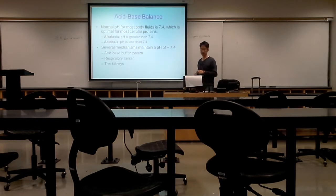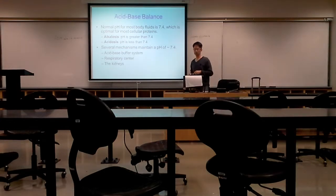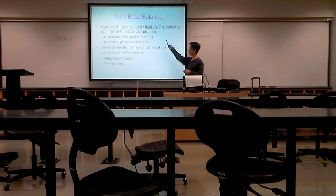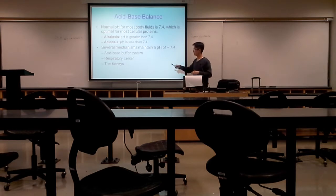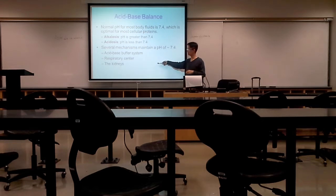For acid-base balance, we want to maintain blood and body fluid at around pH 7.4. Greater than 7.4 is alkalosis; less than 7.4 is acidosis. We have several mechanisms: the bicarbonate buffer system, the respiratory system via the lungs, and the kidneys. We will discuss all three.